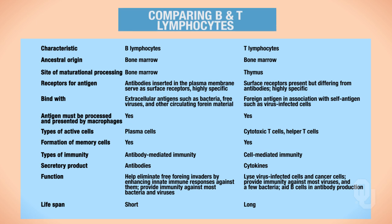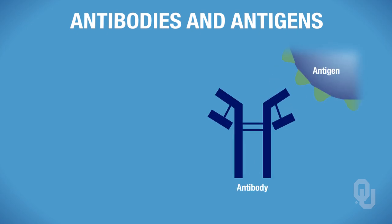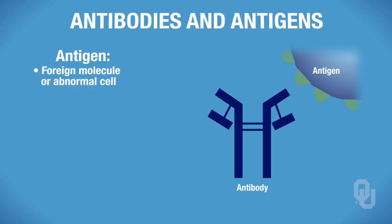This table here compares your B and T lymphocytes. In the left-hand column you have characteristics for each of the B and T lymphocytes, and we're going to go through each one of these. You may want to expand on this table and use it as a study guide—it makes a nice comparison. Before we go any further, we need to talk about antibodies and antigens. The first question is: what is an antigen? An antigen is a foreign molecule or an abnormal cell.